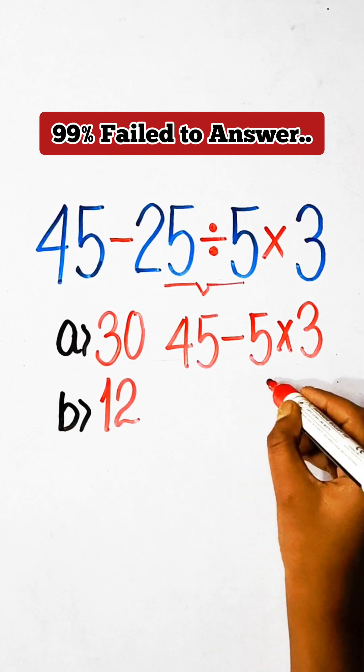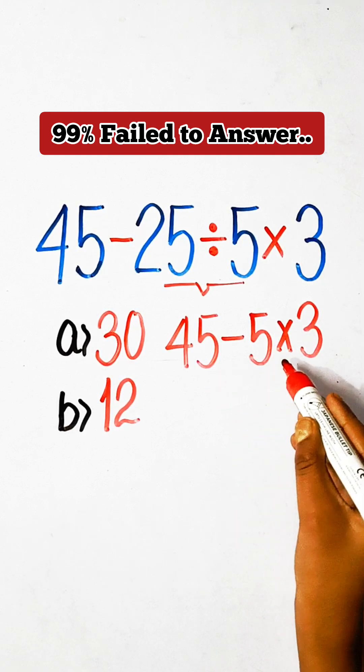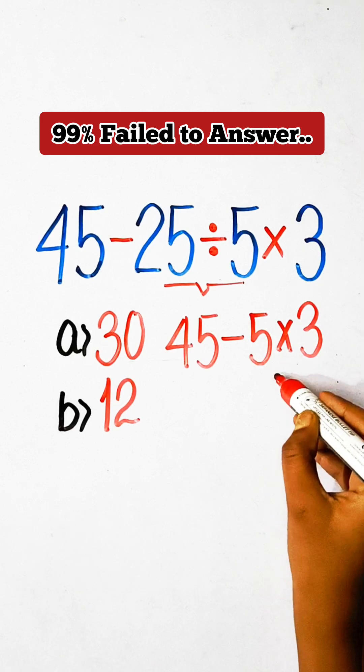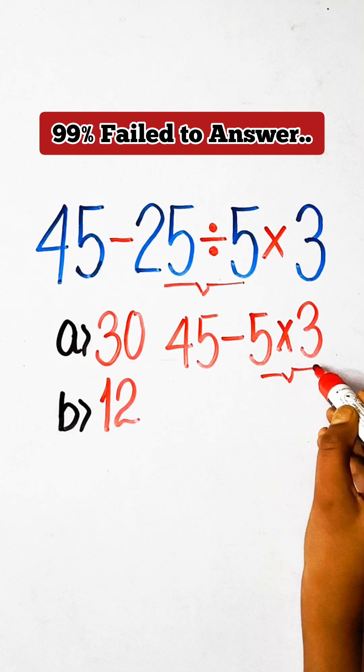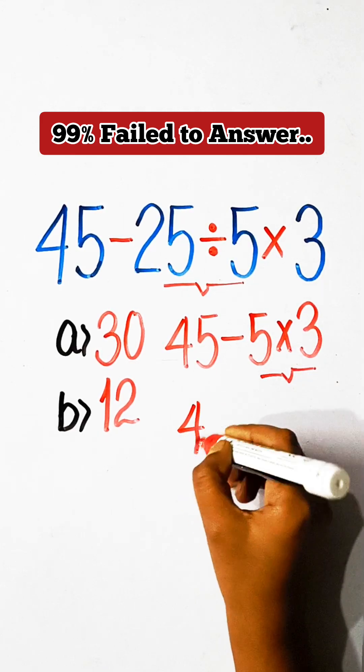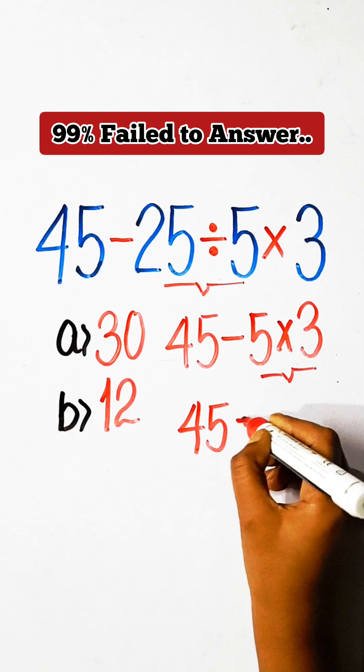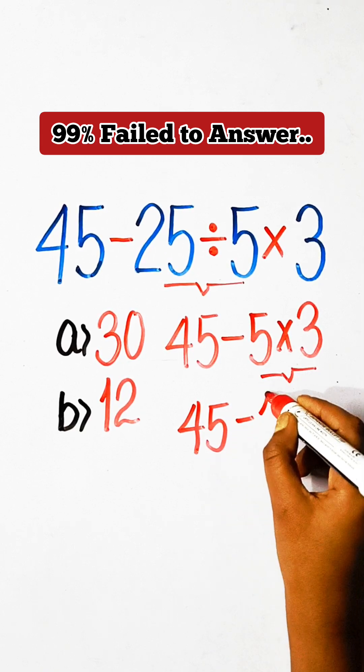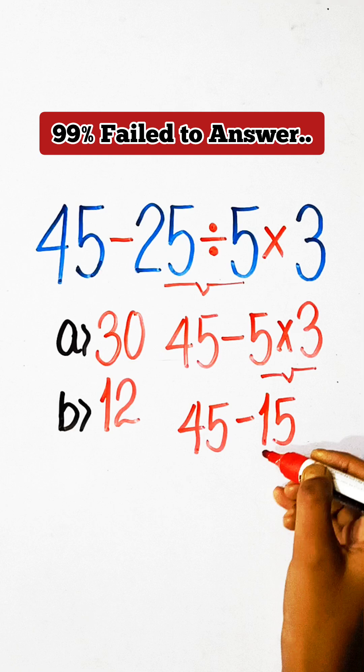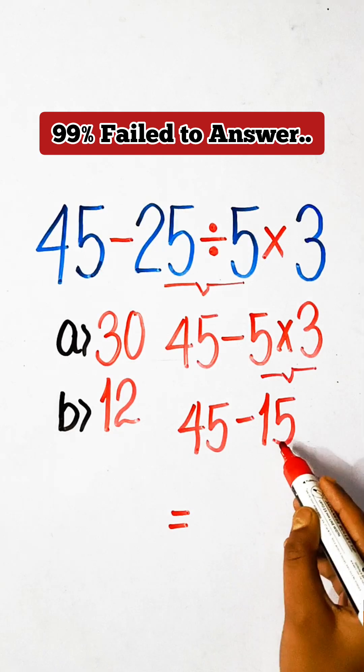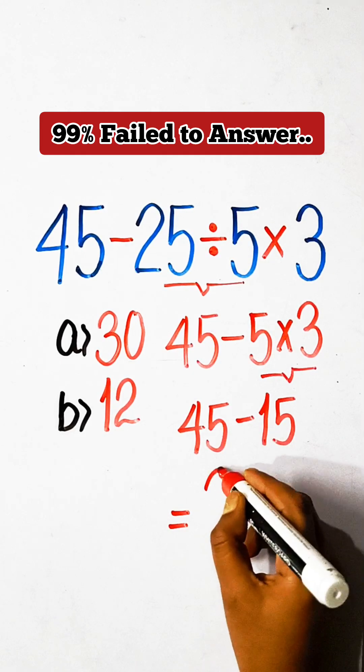And we have here minus and multiplication, so we can multiply first. So we can write here 45 minus 5 into 3 is 15. 45 minus 15 is 30.